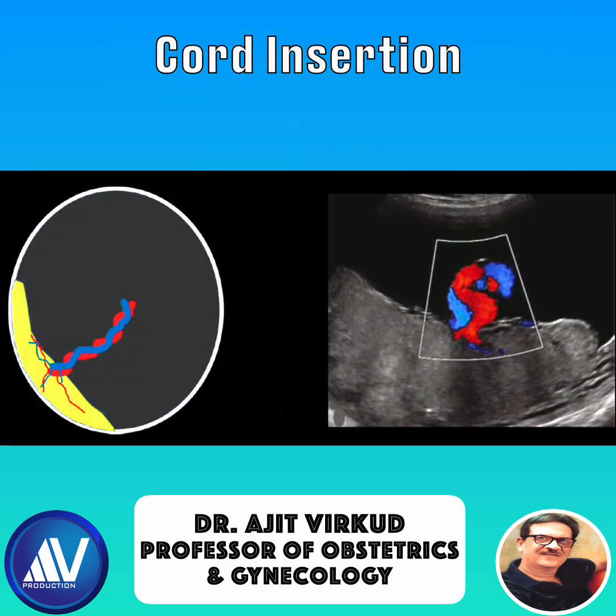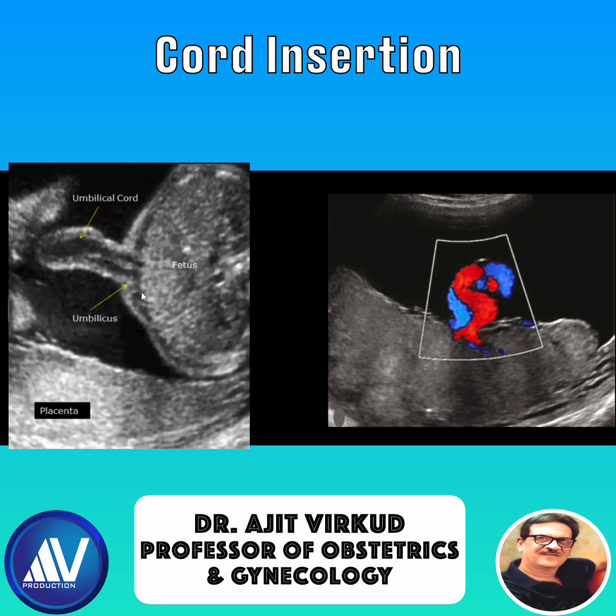In normal cord insertion, the umbilical cord inserts at or near the center of the placenta. In the fetus, it enters at the umbilicus. The ultrasound image shows a normal central cord insertion, which must be assessed with color Doppler to track fetal vessels. Insertion of the umbilical cord to the fetus must be examined; follow the vessels cranially to ensure normal abdominal closure, helping differentiate from omphalocele or gastroschisis.